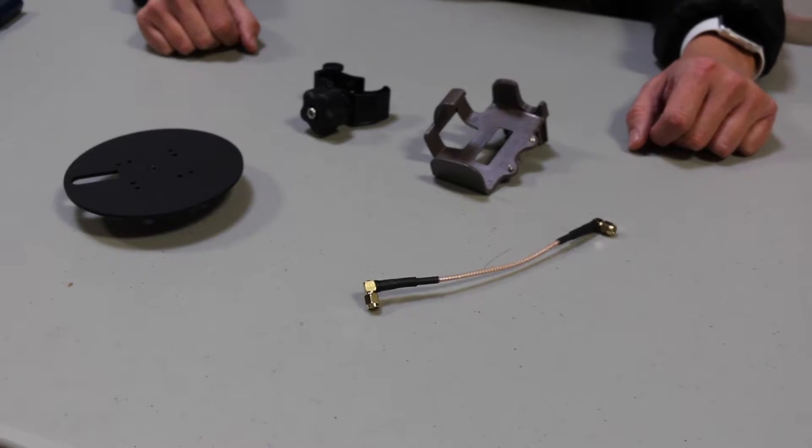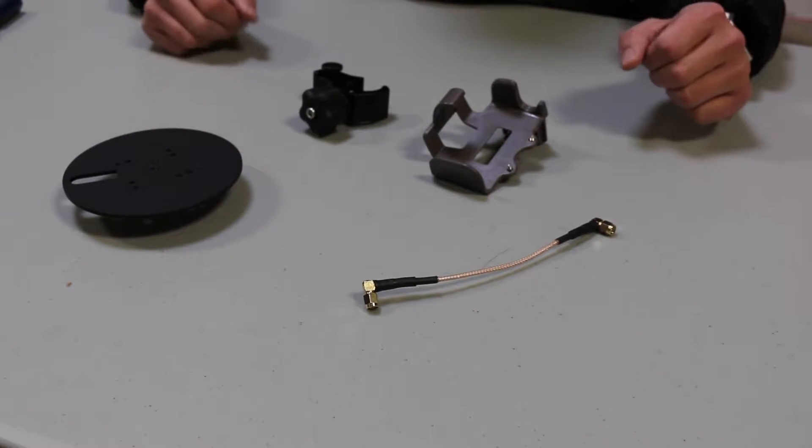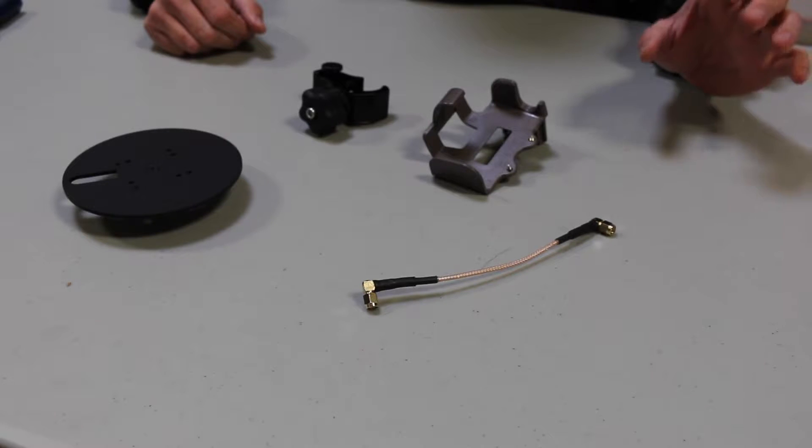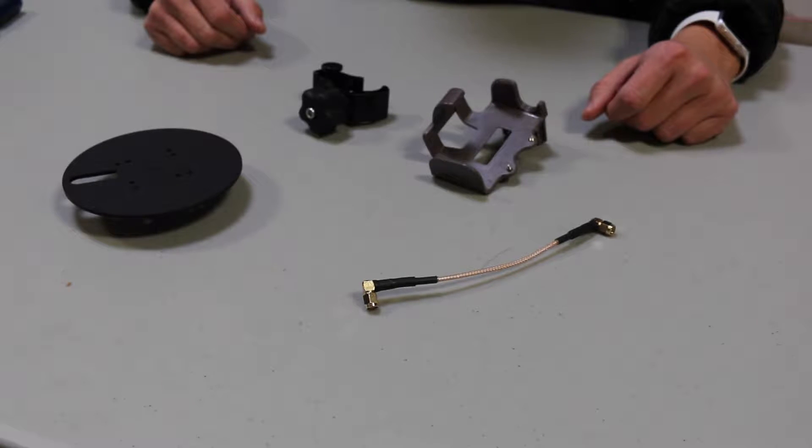R.S. Geospatial here today. We're going to show you an example of the Submeter range pole kit for the Aero product line.